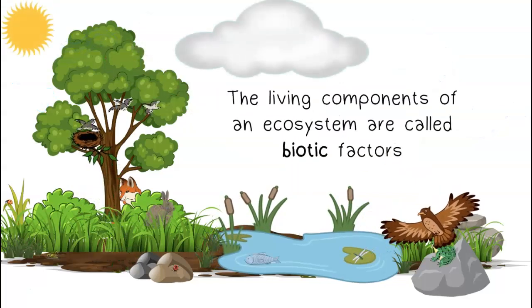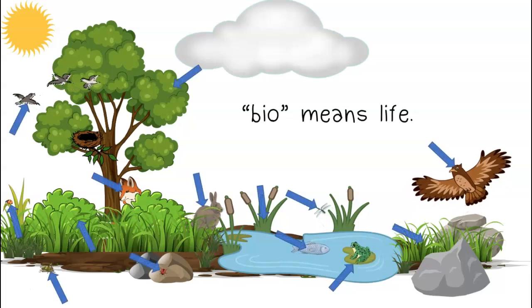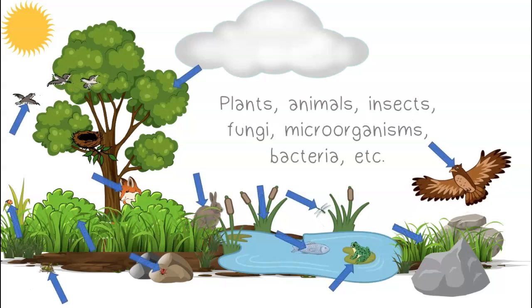The living components of an ecosystem are called biotic factors. Bio means life. Biotic factors include the plants, animals, insects, fungi, microorganisms, bacteria, and other living components of an ecosystem.